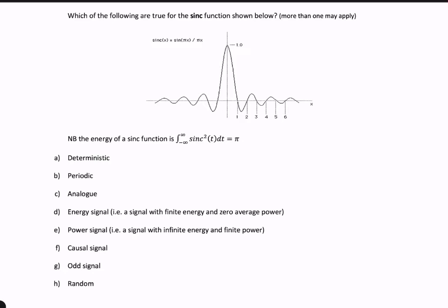The first question is about whether the signal is deterministic. A deterministic signal is a signal that can be represented mathematically. So if we can express it mathematically, if there's a formula or a mathematical expression for the signal, then it's a deterministic signal. In this case, we've actually written the formula right there, so it is possible to represent a sinc function mathematically — therefore it is deterministic.